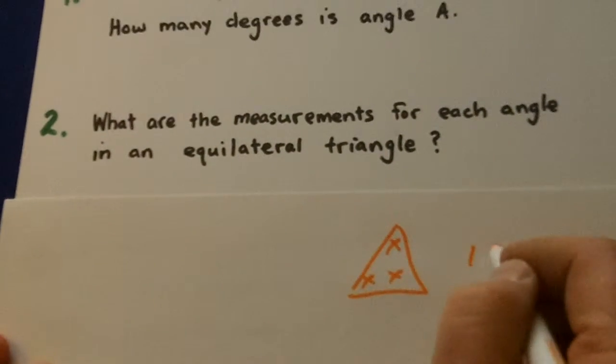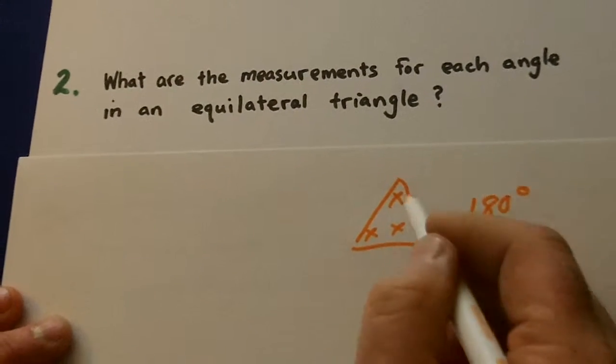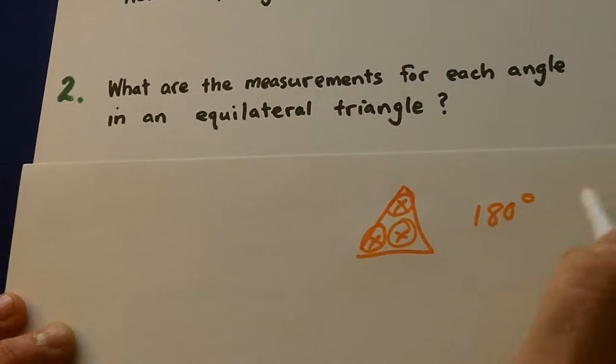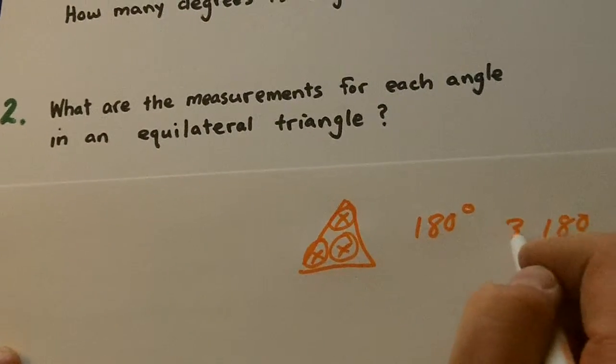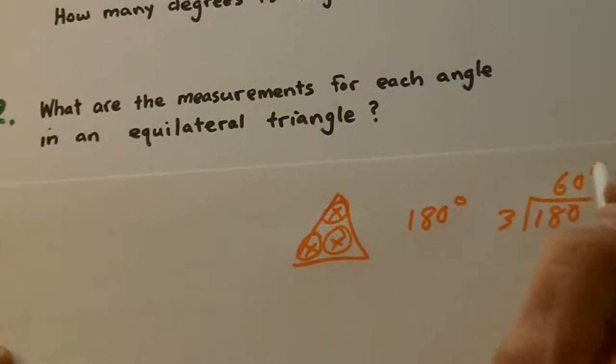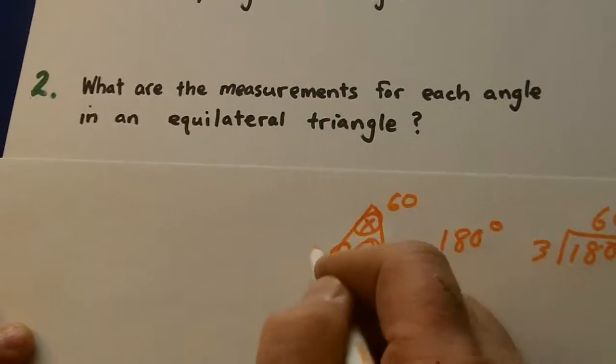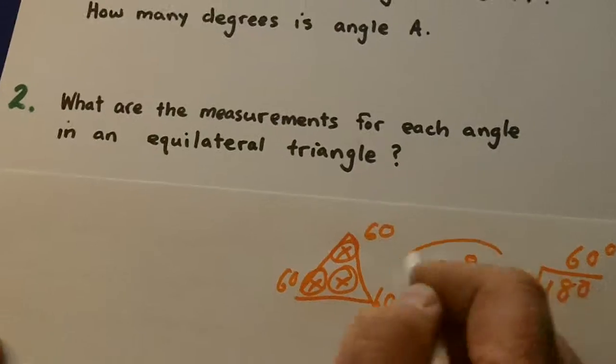Well, if we have 180 degrees and we divide by three equal ones, we just go three into 180, 60 degrees. Now let's see if that works out. What's 60, 60, and 60? 180. Are they all equal? Yeah.